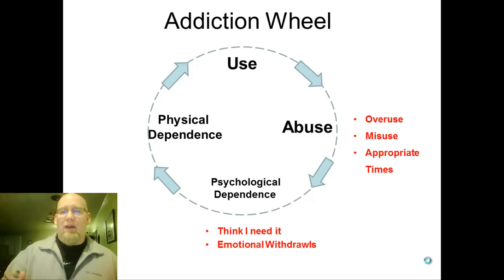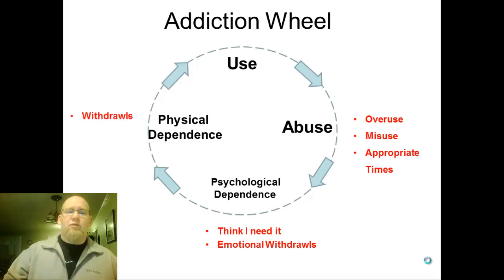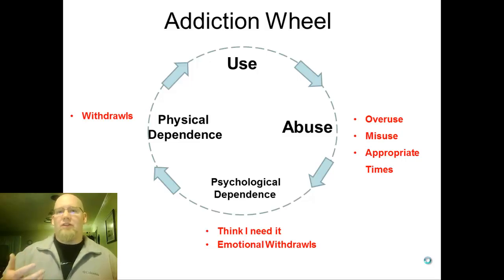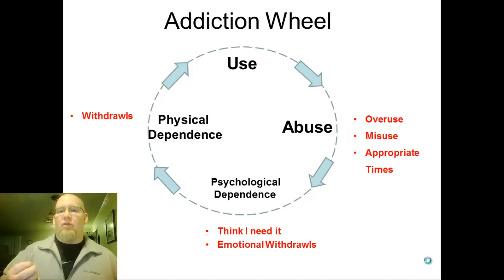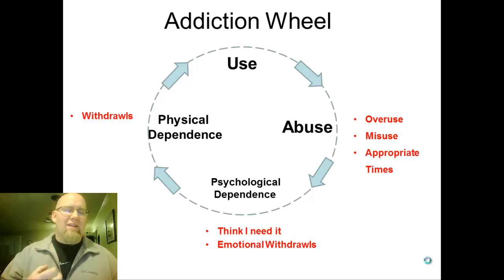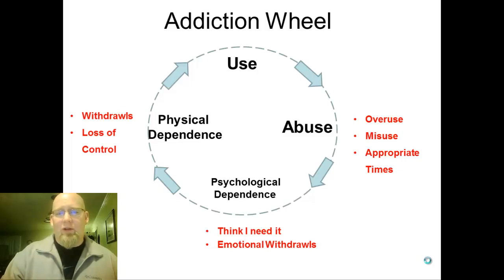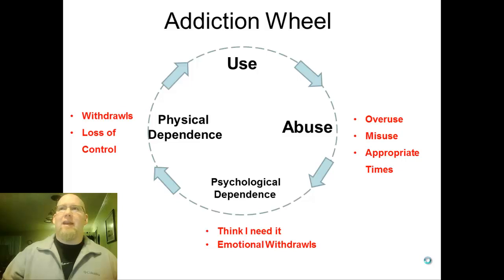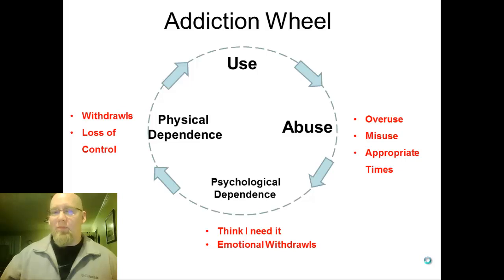The fourth step is physical dependence — you've crossed the trigger level and are physically dependent on the drug. There are a couple of criteria for this. First, a person will go through physical withdrawals if they don't have the drug: shakes, headaches, night sweats, irritability — physical problems that result from not using. If they use the drug, those symptoms go away, which is a clear sign of withdrawal. Their body is now craving the substance and has to have it to feel normal. Another criteria is loss of control — you can't stop using on your own accord.